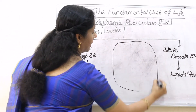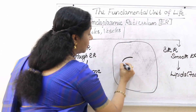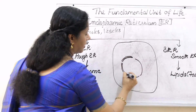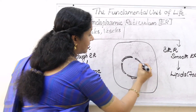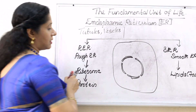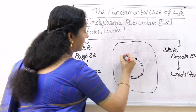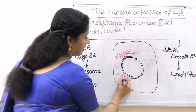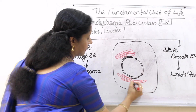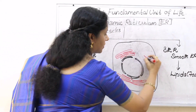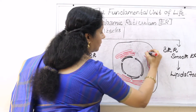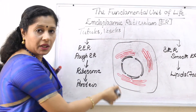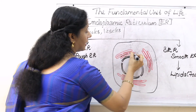I am drawing an animal cell, so no cell wall. Here is the nucleus in the center. The outer membrane of the nucleus is in continuation with some reticulate-like structures. Usually the ones which are associated with or near the nucleus will have ribosomes.